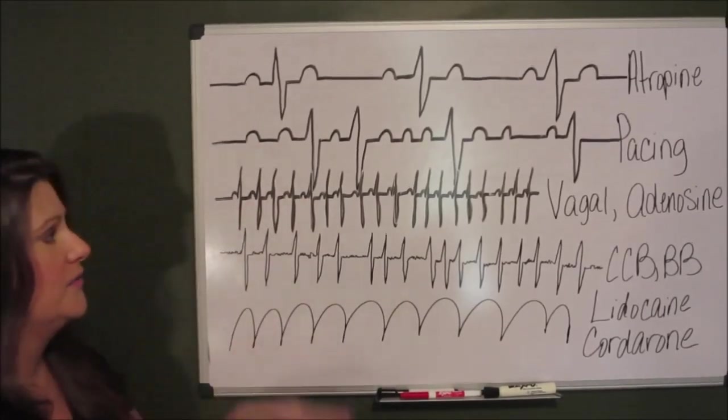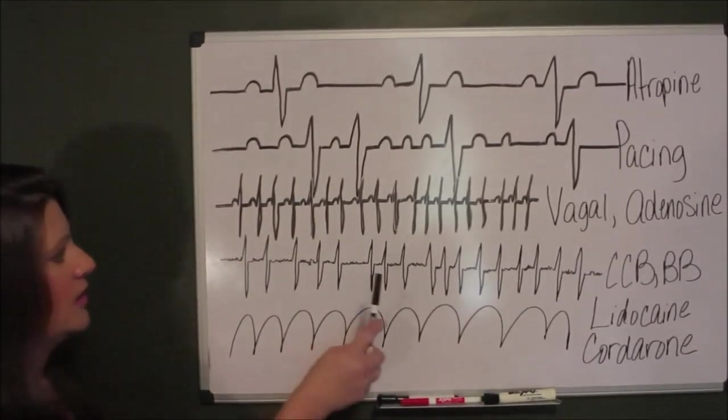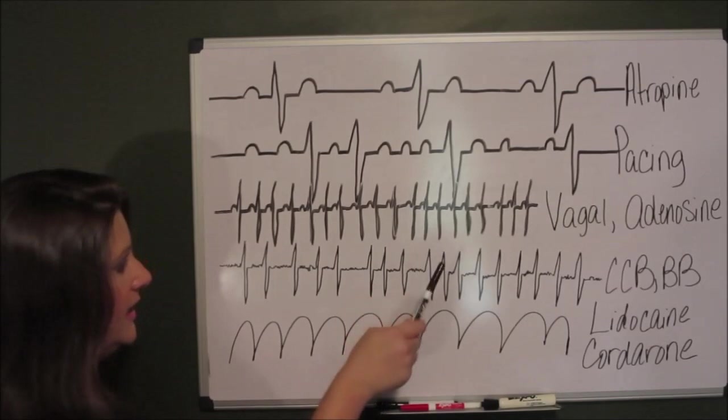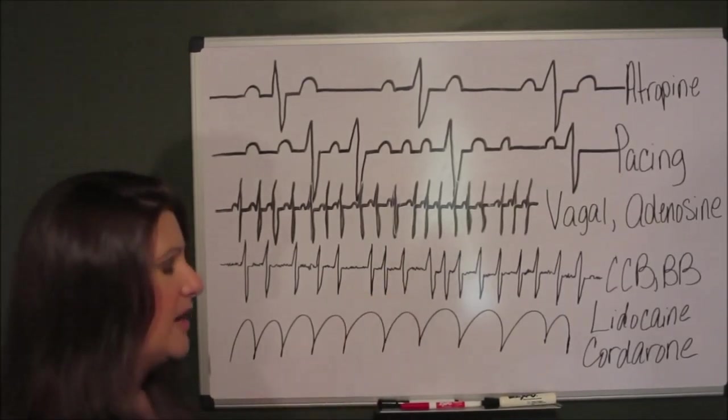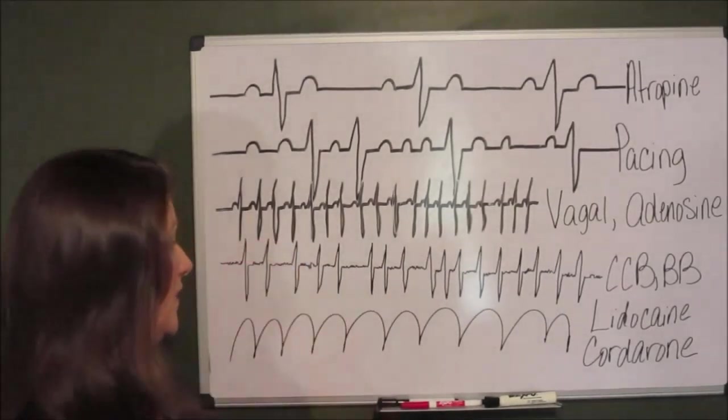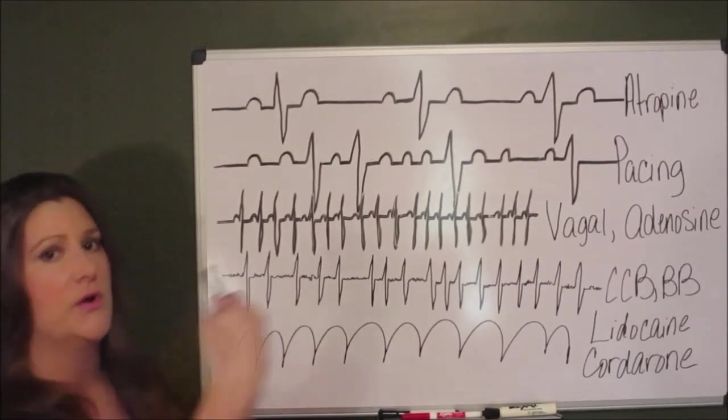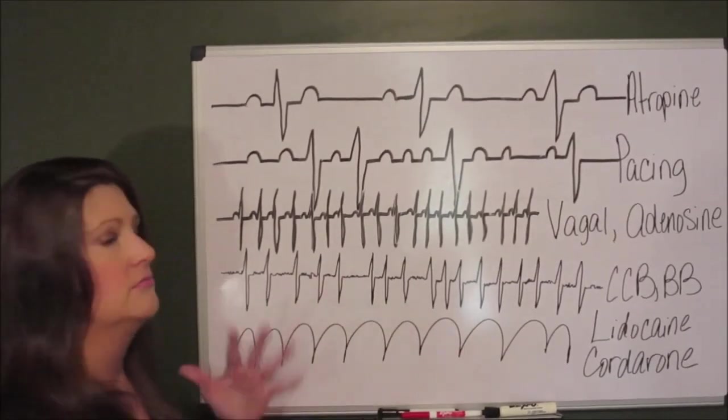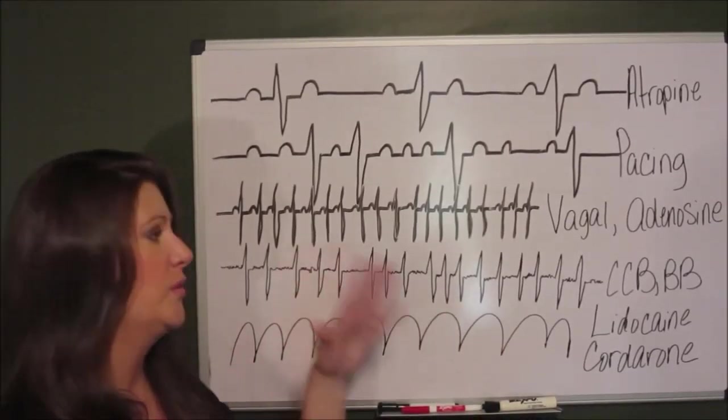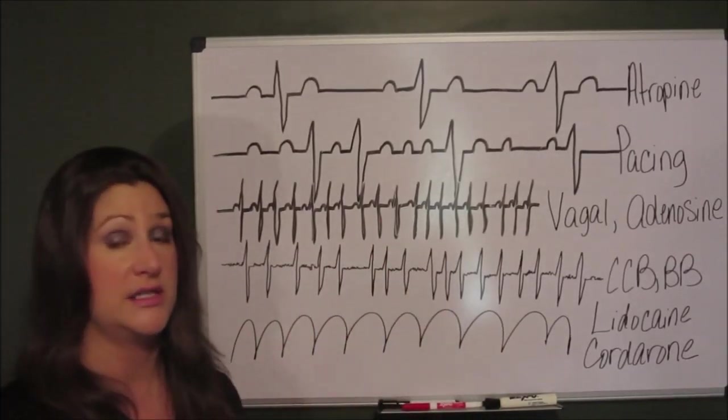Big, big difference. So any of these dysrhythmias starting with SVT, AFib, AFlutter, VTAC with a pulse, we would go for cardioversion if we couldn't get the patient out of the rhythm with some of these lesser invasive methods.